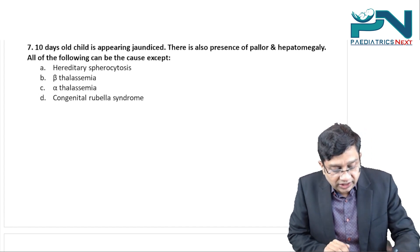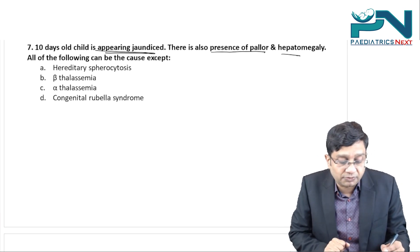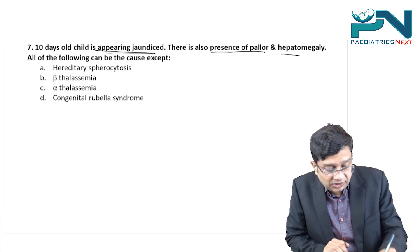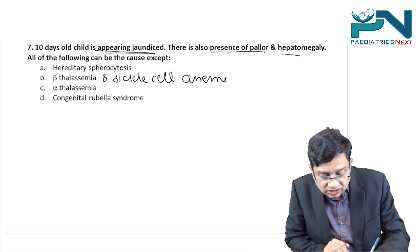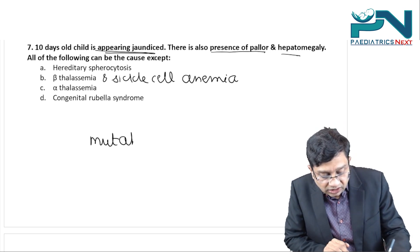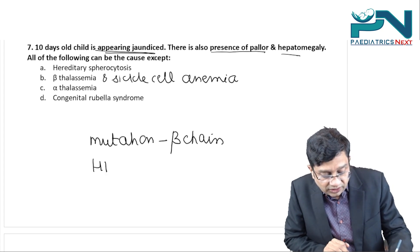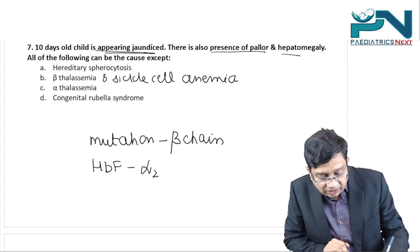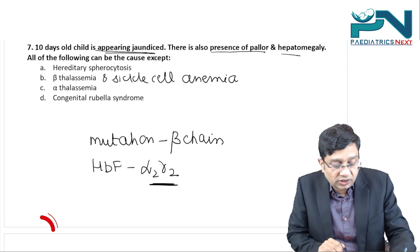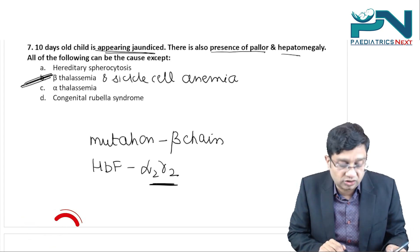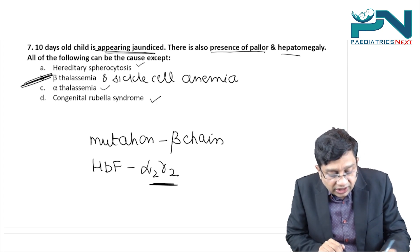A 10-day-old child appears jaundiced with pallor and hepatomegaly. Beta thalassemia and sickle cell anemia are both mutations in the beta chain. At birth, the child has fetal hemoglobin (HbF) composed of alpha and gamma chains, so beta-chain disorders appear after six months of age. Therefore, neonatal jaundice is not due to beta thalassemia or sickle cell. Causes in this age group include hereditary spherocytosis, alpha thalassemia, and congenital rubella syndrome.